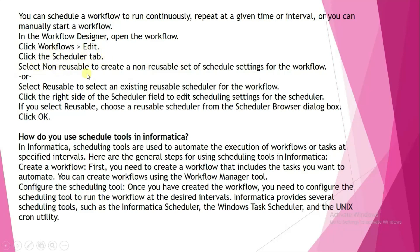You can also schedule a workflow to run continuously, repeat at a given interval, or manually start it. In the Workflow Designer, open the workflow, click Workflows, Edit, and then click the Scheduler tab. Select non-reusable to create a non-reusable schedule, or select reusable to use an existing reusable scheduler. Click the right side of the scheduler field to edit scheduling settings, then click OK.